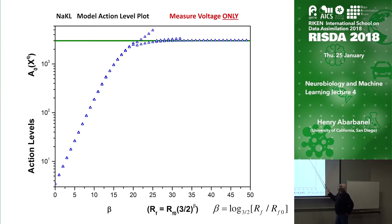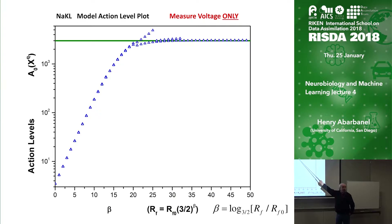You can check that if the action becomes independent of RF, the only term that matters is the measurement error term. The measurement error term by definition comes from a Gaussian, so x minus y is distributed as a Gaussian and x minus y squared is distributed as chi-squared. You can calculate the expected value of that, and that's the green line. The calculation is totally consistent — we found the minimum consistent with the underlying action.